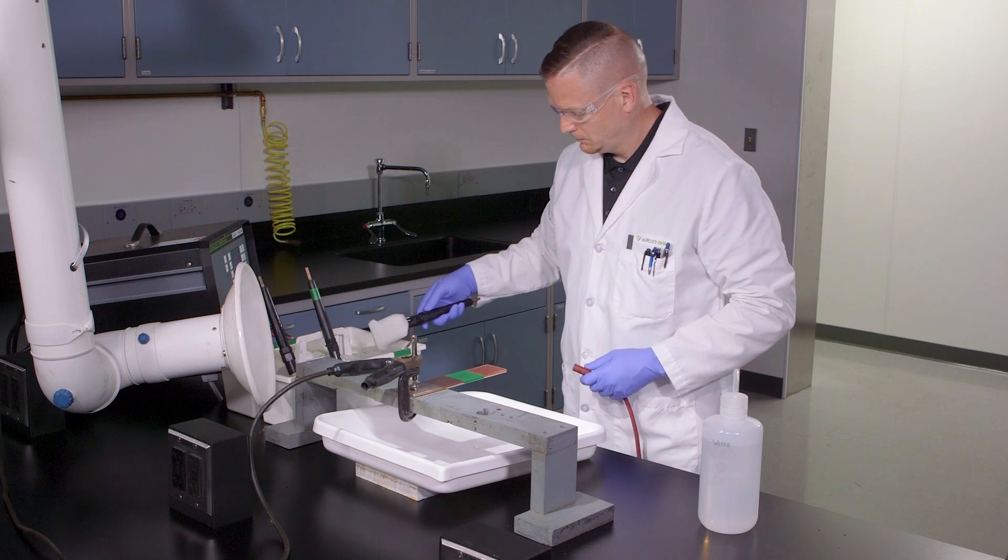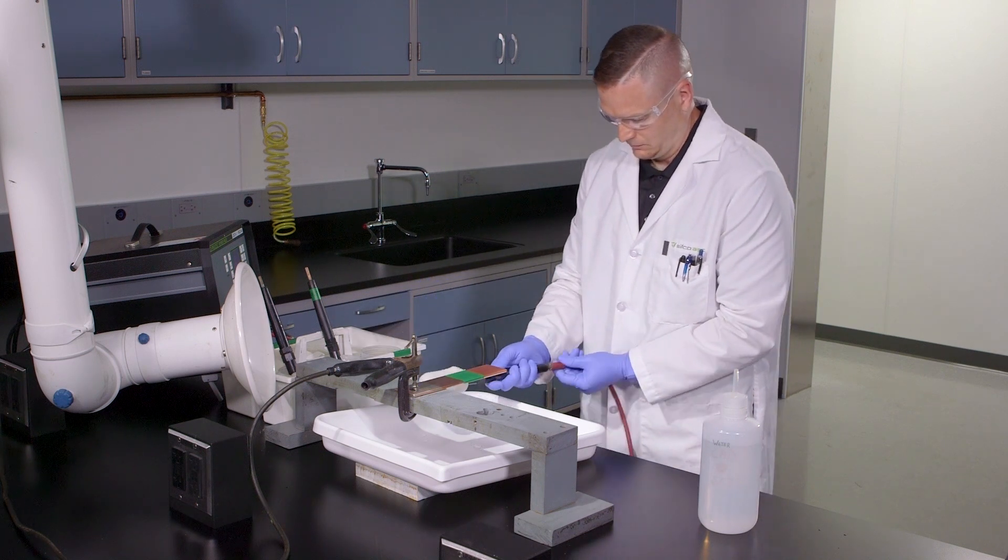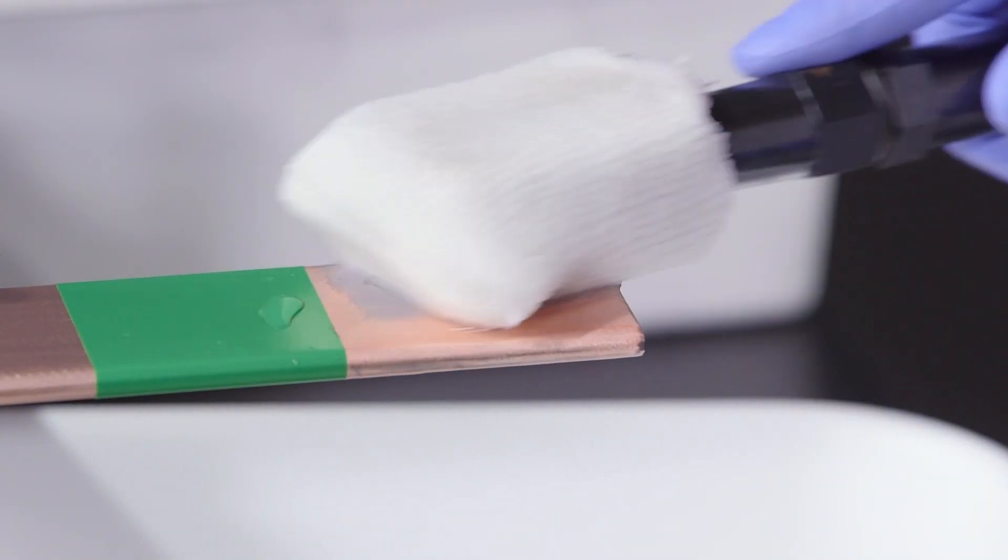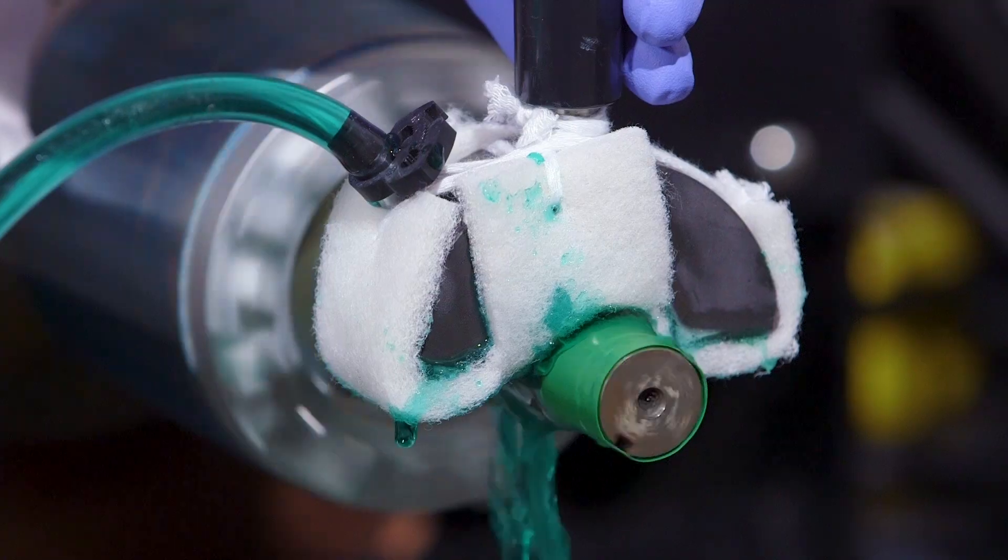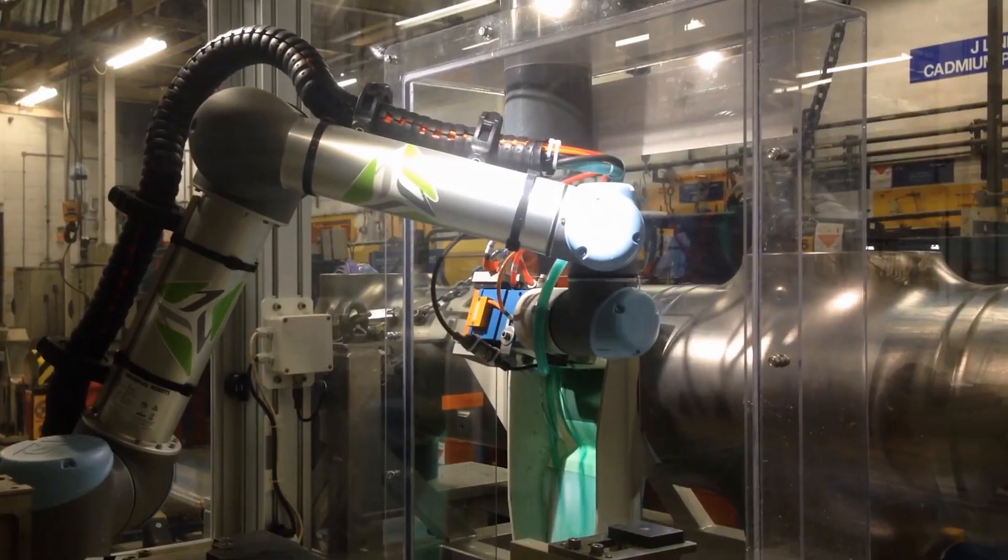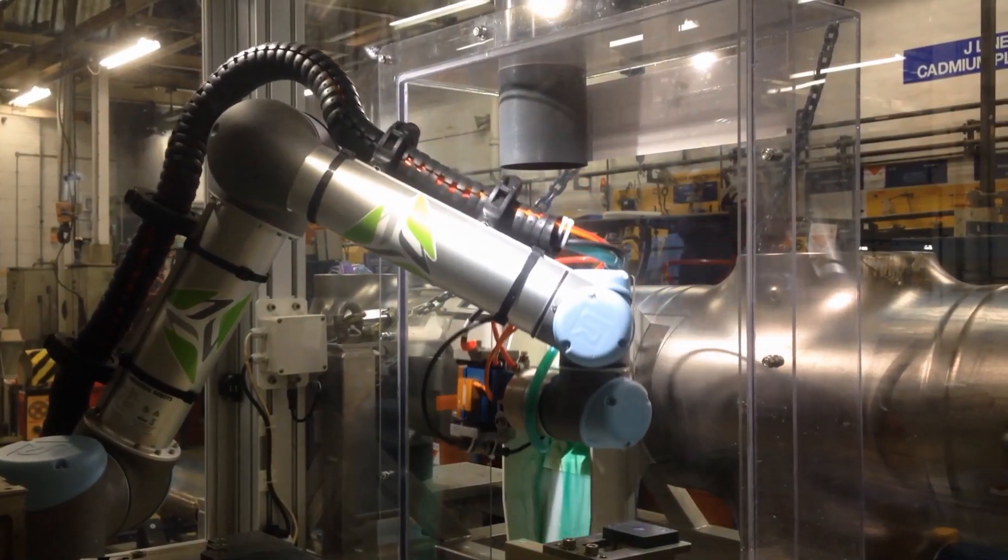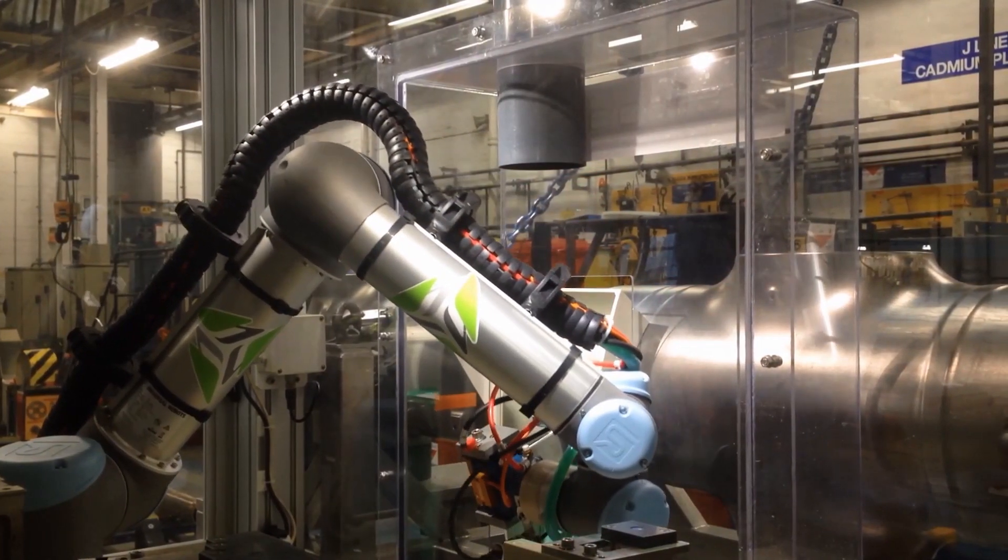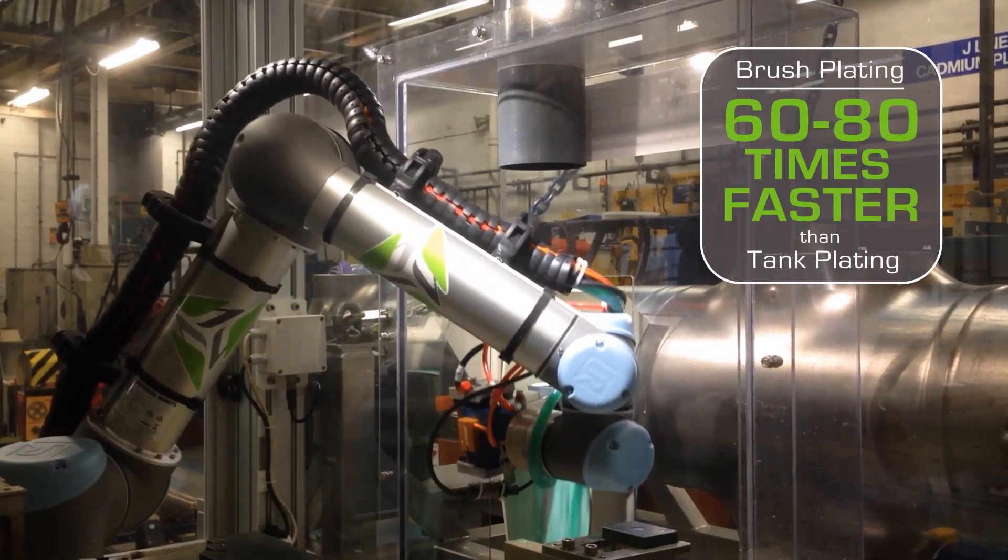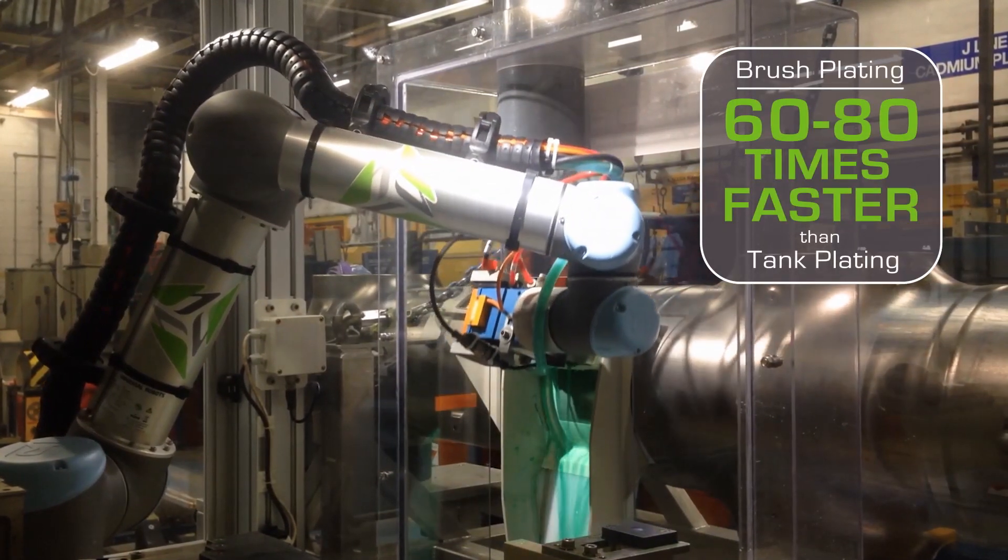Brush plating requires movement between the plating tool and the part. This can be accomplished by moving the plating tool over the part, by moving the part and keeping the plating tool stationary, or by moving both. Because the brushing action disturbs the hydrodynamic boundary layer of the surface, brush plating is 60 to 80 times faster than tank plating.